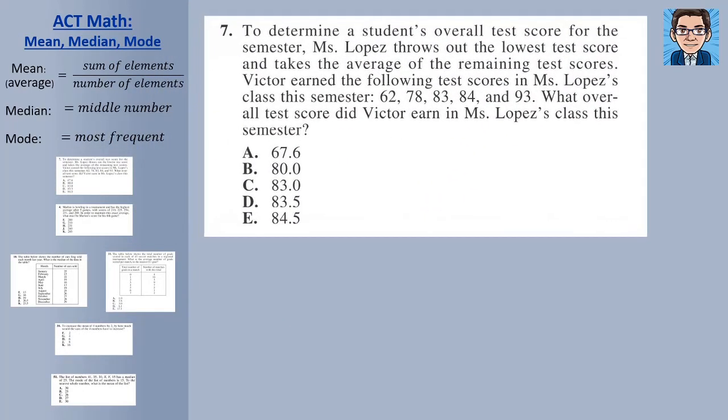On the first problem, it says that Mrs. Lopez throws out the lowest score. So she eliminates the lowest score, and then she takes the average of the remaining test scores. So we've got these five scores, and we want to find out what the average is. So first of all, we need to get rid of the lowest score. 62 is the lowest out of this, so we get rid of the lowest score.